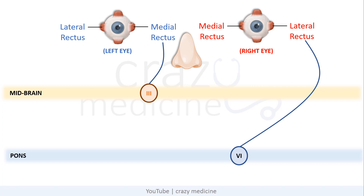In order to avoid disturbance or double vision, the movement to look to the right side in our example should occur together — right lateral rectus should do abduction and left medial rectus should do adduction at the same time. For that, the 6th nerve nucleus is connected to the contralateral 3rd nerve nucleus by something called the medial longitudinal fasciculus, or MLF. It is a heavily myelinated tract in the brainstem, named so because it is located medially and is a longitudinal structure. This is how movement to the right side occurs simultaneously in both eyes.